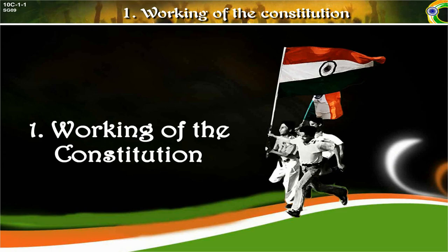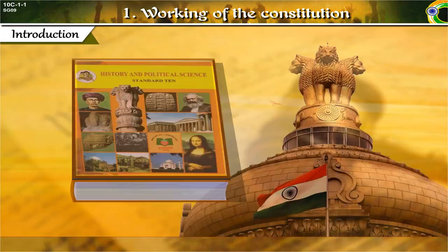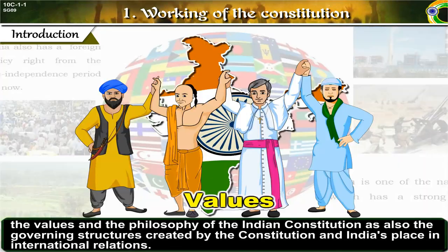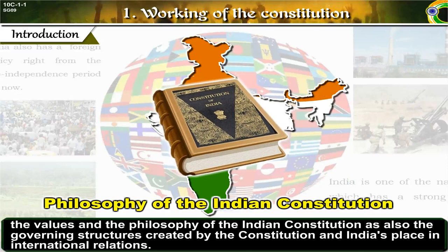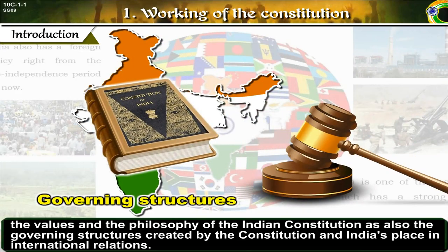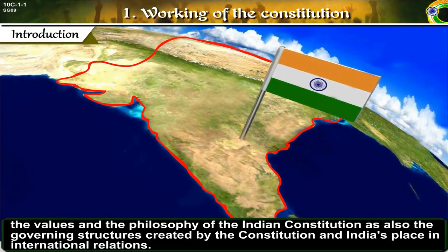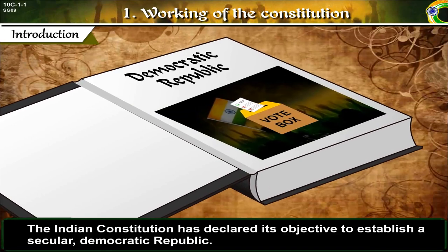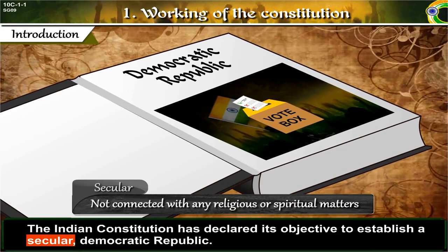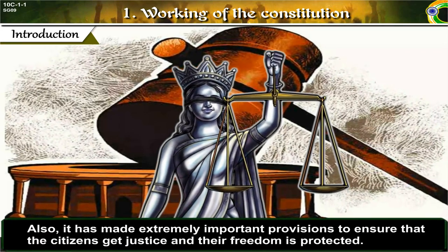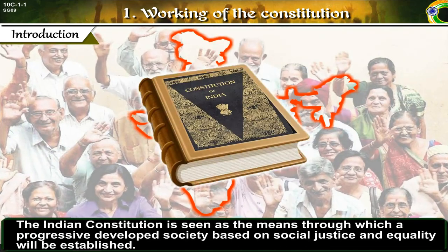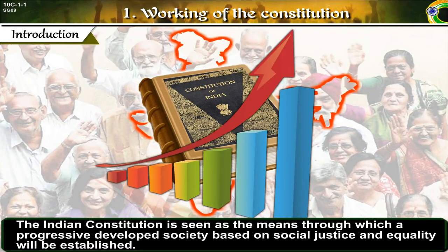Chapter one: Working of the Constitution. Introduction. The textbooks of political science till now have helped us to take an overview of local government, the values and the philosophy of the Indian Constitution, as also the governing structures created by the Constitution and India's place in international relations. The Indian Constitution has declared its objective to establish a secular democratic Republic. Secular means not connected with any religious or spiritual matters. It has also made extremely important provisions to ensure that the citizens get justice and their freedom is protected.